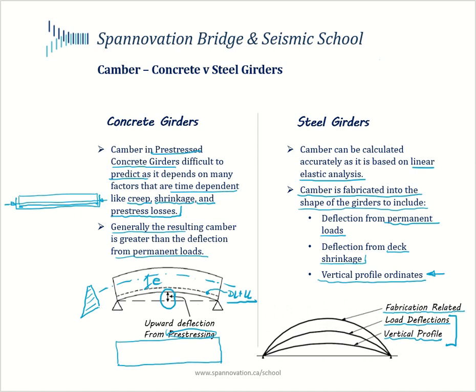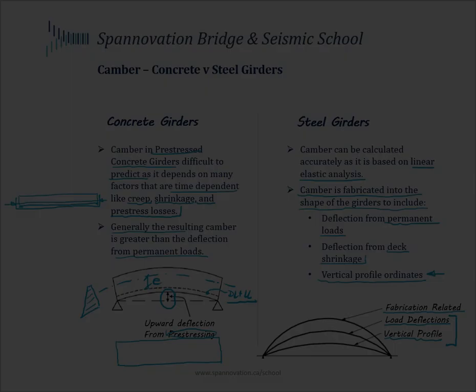The haunch becomes the primary mechanism for achieving the target roadway profile in concrete girders. If you don't have a background on bridge girder haunches, we encourage you to visit our YouTube channel and watch the video on haunches. Thank you very much.